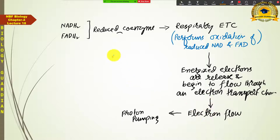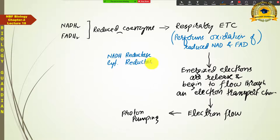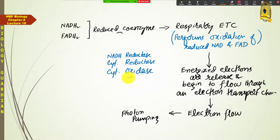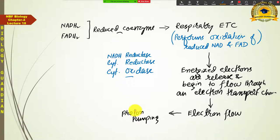The three components are: NADH reductase (also called NADH hydrogenase), cytochrome reductase, and cytochrome oxidase. These three are components of the respiratory electron transport chain — they are both electron carriers and proton pumps. When electron flow occurs through them, proton pumping begins, always in the direction from matrix to inter-membrane space.